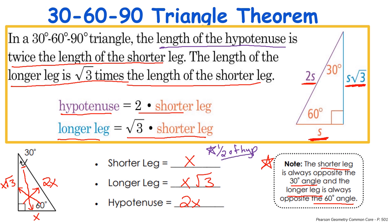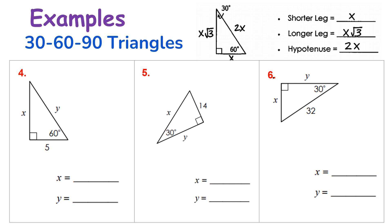Let's try some problems with the 30-60-90 degree triangle theorem. X would be my longer leg because it is opposite the 60 degree angle. The longer leg is always the square root of three times the shorter leg. My shorter leg is five, and since this angle is 60 and the right angle is 90, the remaining angle must be 30. My hypotenuse is two times the shorter leg, so two times five equals ten. Therefore x equals five times the square root of three, and y equals ten.